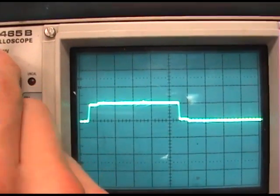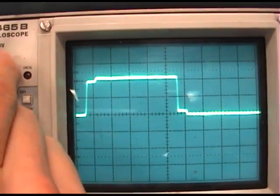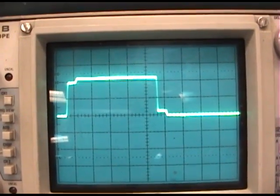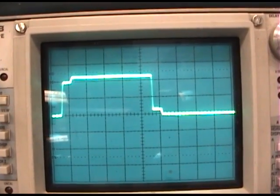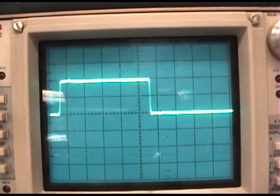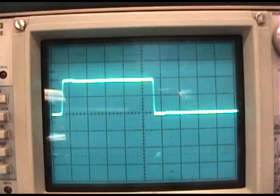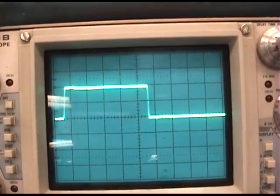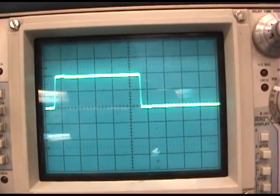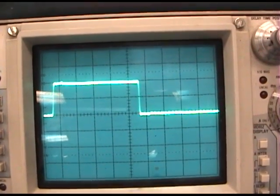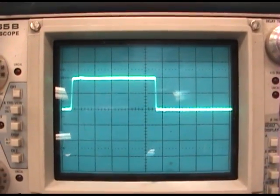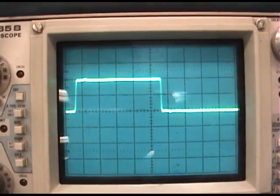Right now, I'm just going to set my volts per division to half a volt. And, I'm going to try and match this to a perfect square wave. And, at this point, the potentiometer should be at about 50 ohms. And, this is how you can tell what the impedance is of the scope or of the cable.